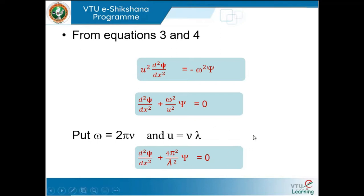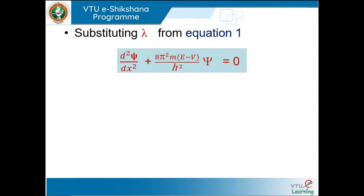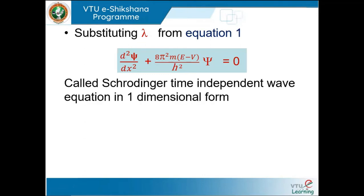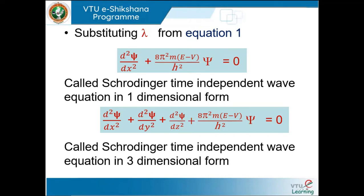Substituting the value of λ = h/√(2m(E−V)) into the equation gives the one-dimensional time-independent Schrödinger wave equation: d²ψ/dx² + (8π²m(E−V)/h²)ψ = 0. If the particle moves in all three directions x, y, z, the three-dimensional form is: d²ψ/dx² + d²ψ/dy² + d²ψ/dz² + (8π²m(E−V)/h²)ψ = 0. This is the Schrödinger time-independent wave equation in three-dimensional form.